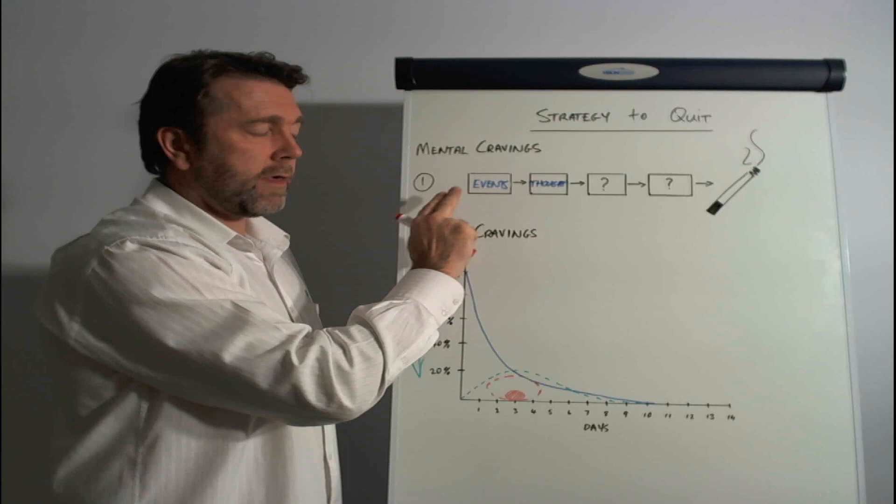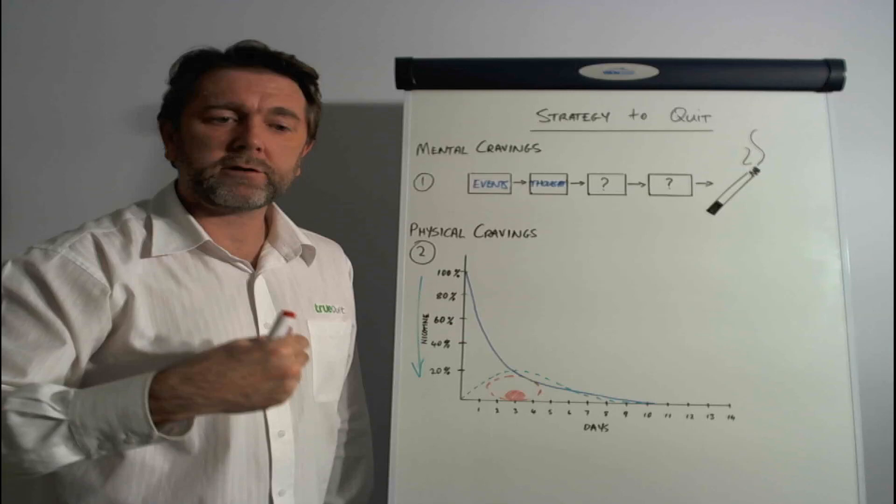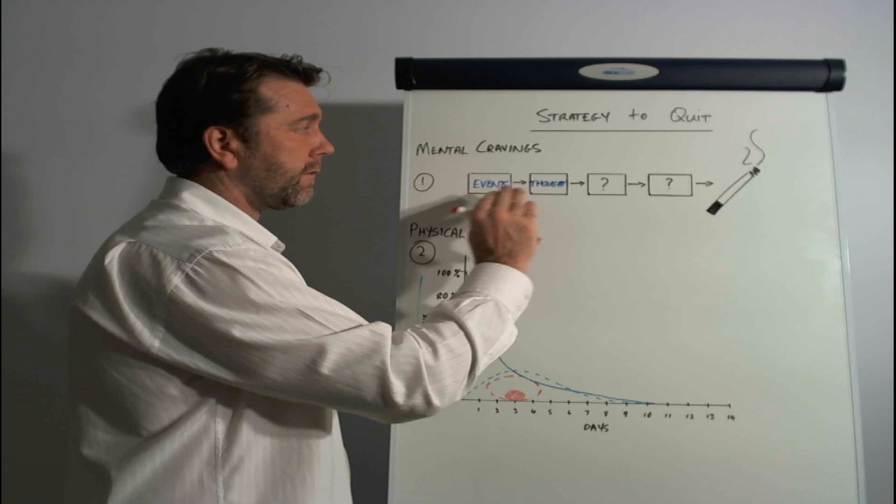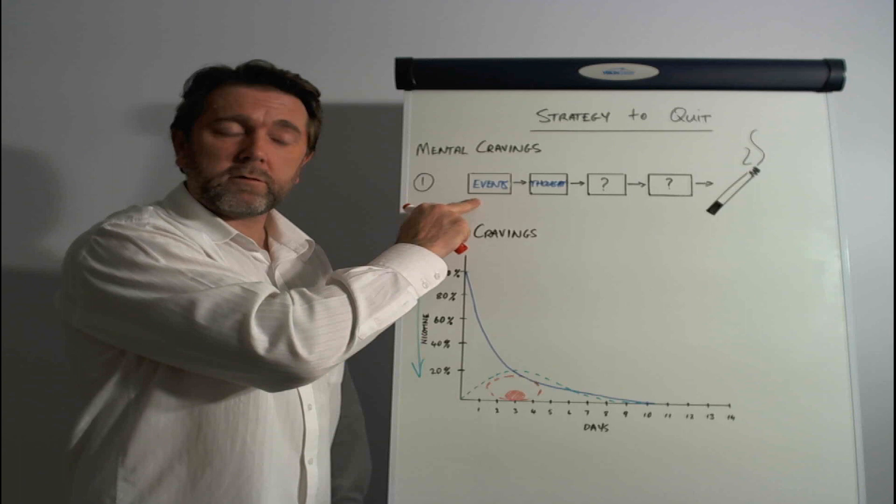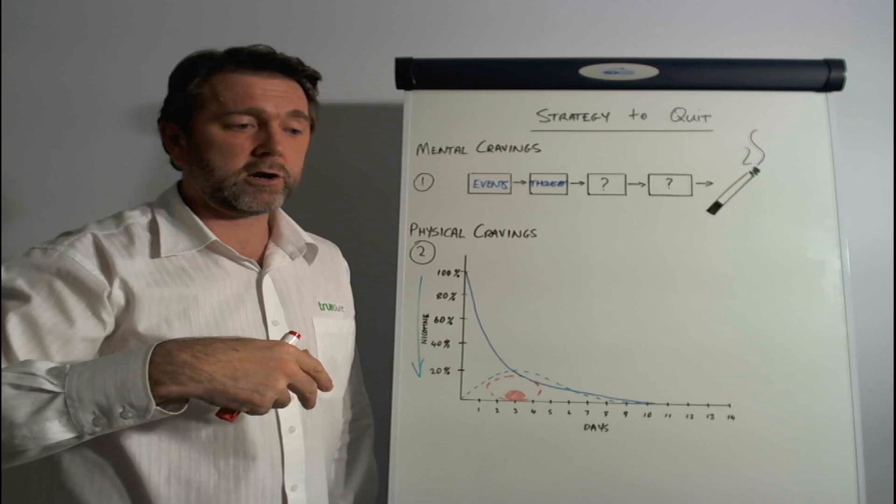So now, if we look at that as a strategy, you can recognize some of the attempts that other programs or systems use to try and help people quit. Whether they realize about the four stages of the mental process or not, modifying events is an attempt to eliminate this stage.